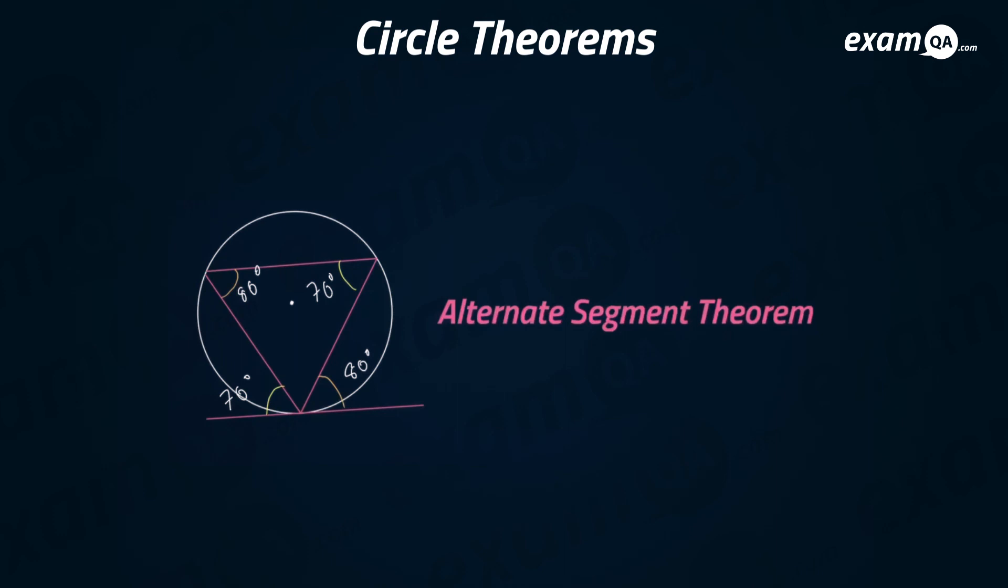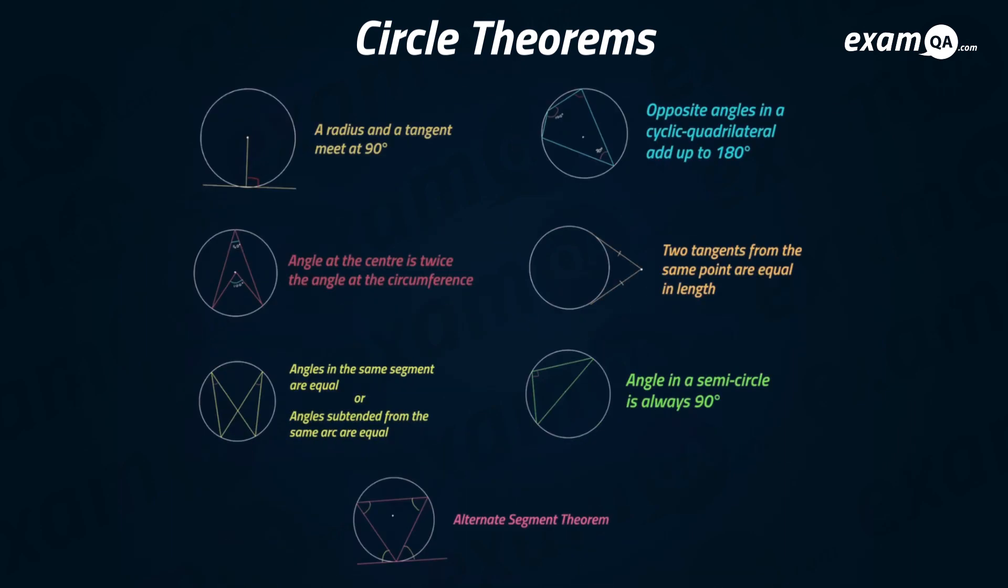Just memorize that the shape that it comes in: you have a circle, then you have a triangle inside the circle, then at one of the points on the triangle there's a tangent. And that angle equals that angle, that angle equals that angle.